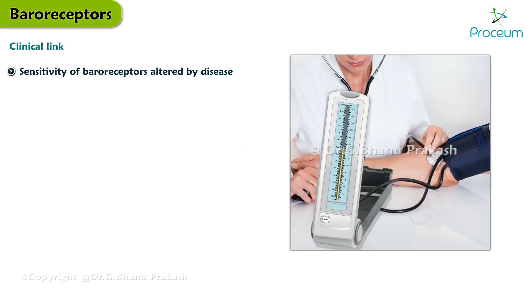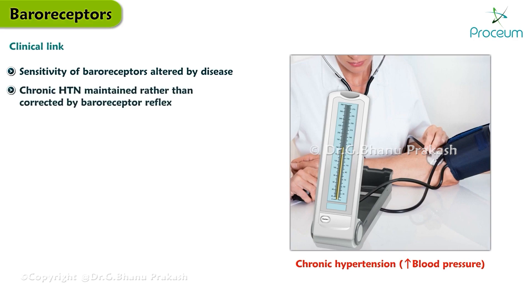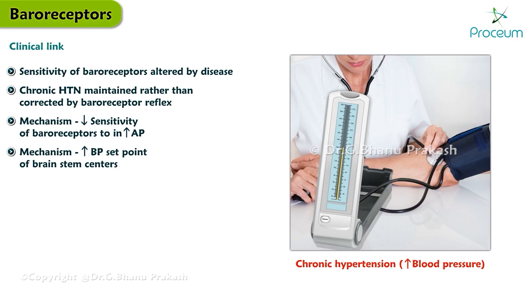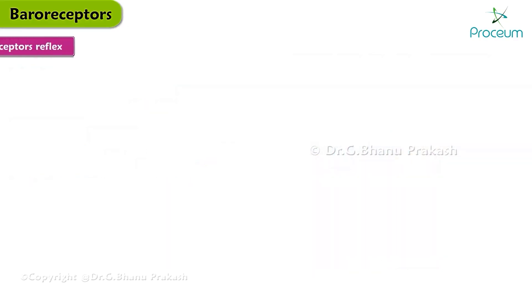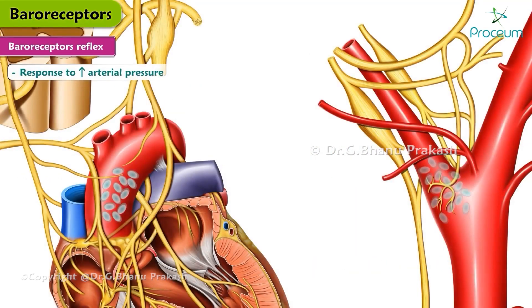Let's look at the clinical link. The sensitivity of the baroreceptors can be altered by disease. For example, in chronic hypertension, the baroreceptors do not see the elevated blood pressure as abnormal. In such cases, hypertension will be maintained rather than corrected by the baroreceptor reflex. The mechanism of this defect is either decreased sensitivity of the baroreceptors to increases in arterial pressure, or an increase in the blood pressure set point of the brainstem centers. This is an example of receptor adaptation; a resetting of the reflex in the CNS occurs as well.